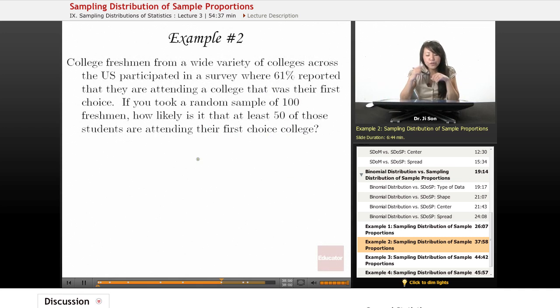Example 2. College freshmen from a wide variety of colleges across the U.S. participated in a survey where 61% reported that they are attending a college that was their first choice. If you took a random sample of 100 freshmen, how likely is it that at least 50 of those students are attending their first choice college?